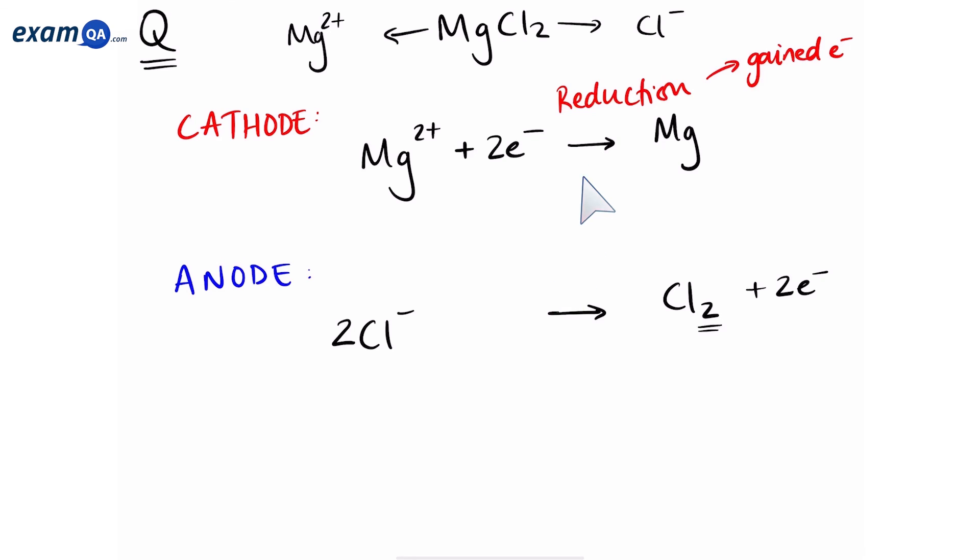The top reaction is a reduction because it has gained electrons, or you can see the charge has gone from two plus to zero. Therefore, it has been reduced. The reaction at the anode is an oxidation reaction. It has lost electrons, and you can see the charge has gone from minus one to zero, so it has increased.